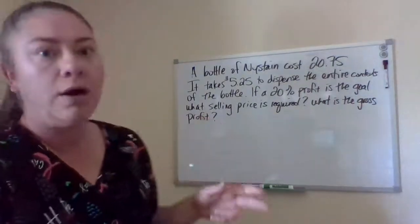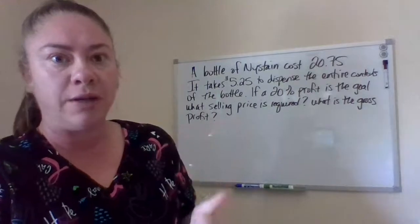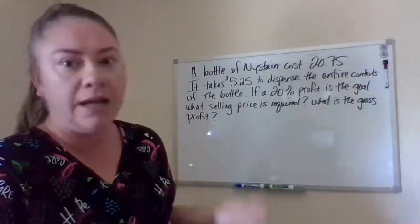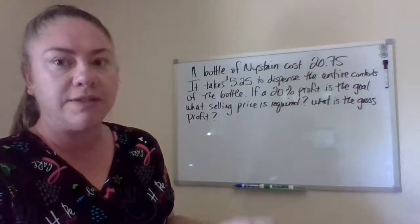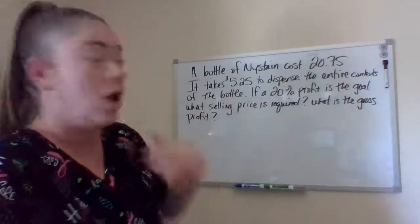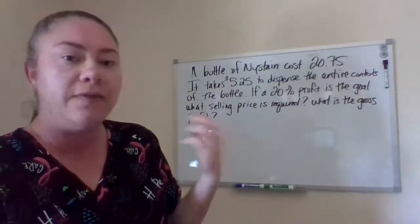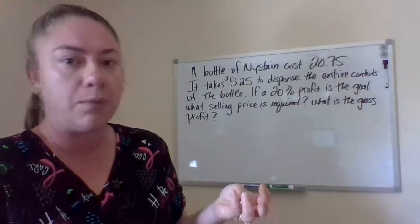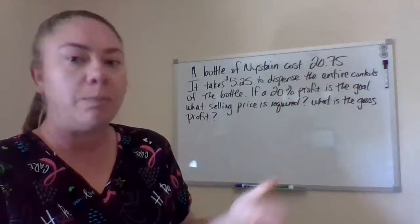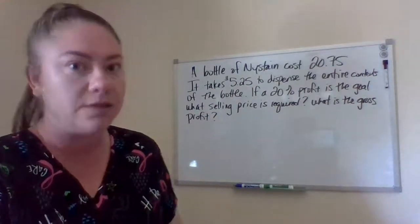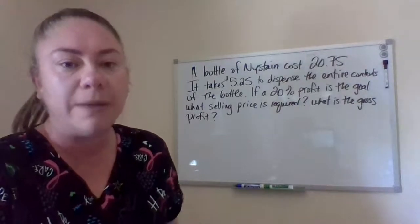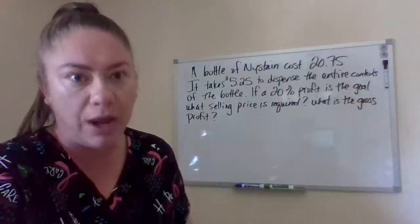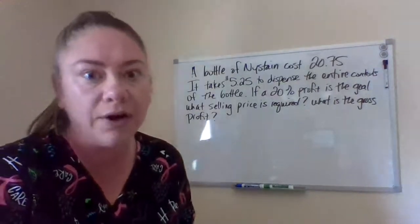These types of problems involve a particular product purchased at a particular price with a dispensing fee involved. In this case, a bottle of Nystatin costs the pharmacy $20.75 — that's our AWP, that's how much we purchase it for. It costs $5.25 to dispense this bottle. The dispensing fee is calculated based on pharmacy personnel's time, pharmacy supplies used, shipping, and the cost of maintaining the supply. If a 20% profit is the goal, what should the selling price be?